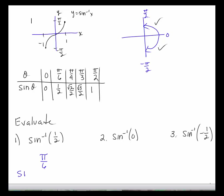The inverse sine of 1/2 is equal to pi over 6 — the angle whose sine is 1/2 is pi over 6. The angle whose sine is 0 is 0.